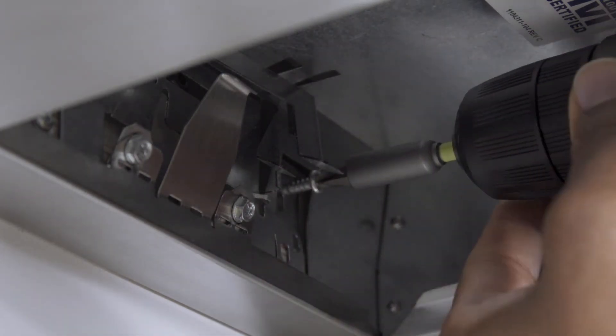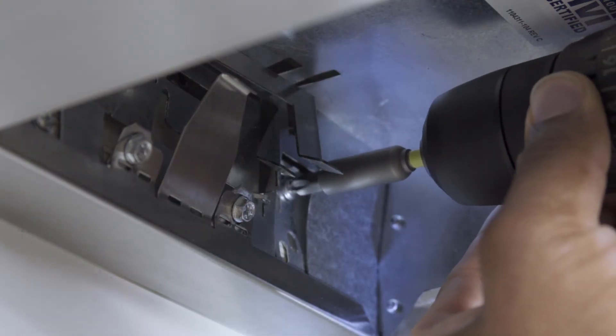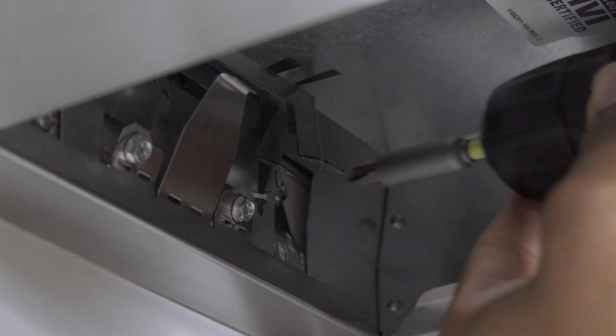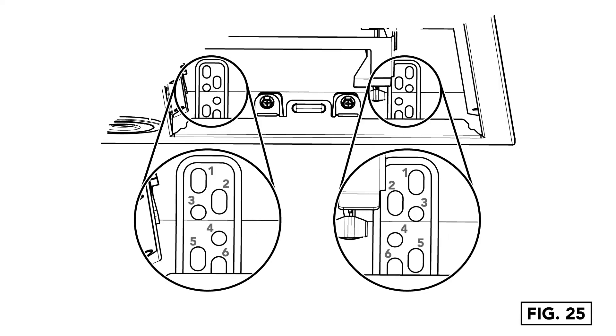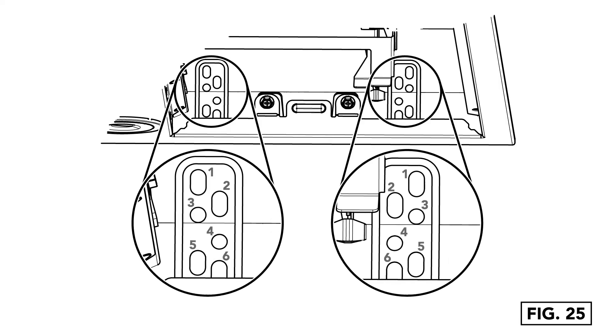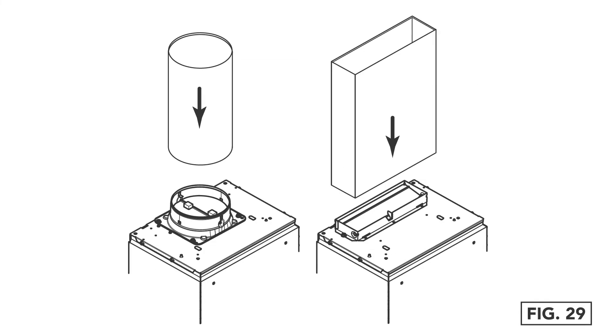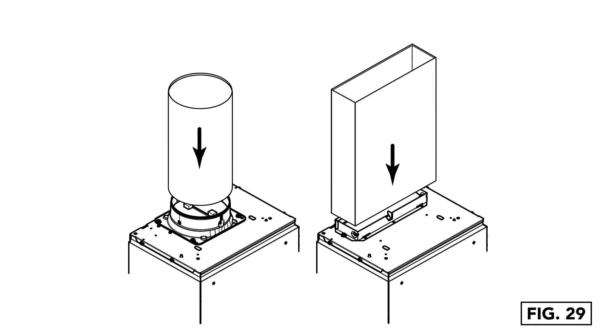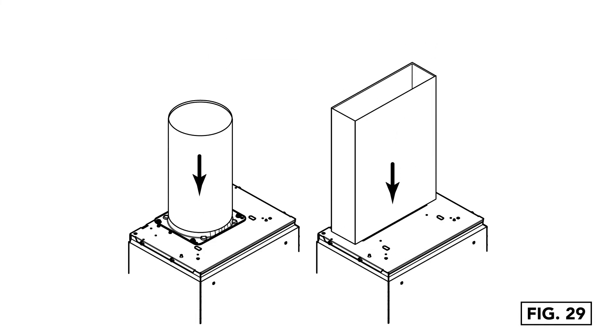Then, secure the unit into place using the included screws from the parts bag. Reference the install instructions for which holes to use. Once the unit is secure, connect the ductwork to the adapter damper on top of the unit.